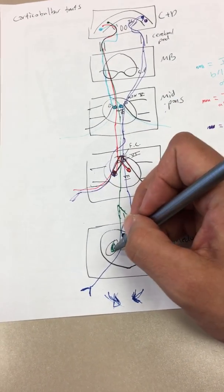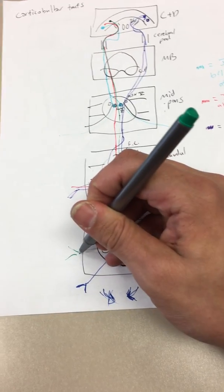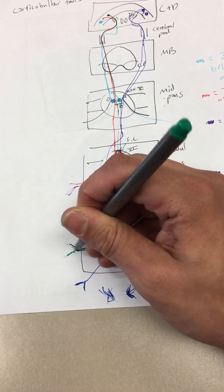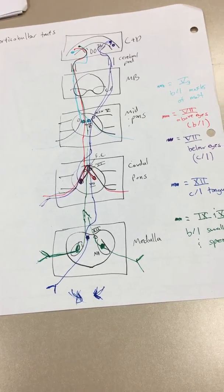And then from there, it will also travel bilaterally to the pharynx and the larynx. This makes sense to me just because swallowing is so important. You lose your ability to swallow, and you can very easily choke and die. So, it makes sense that this would be bilateral innervation.